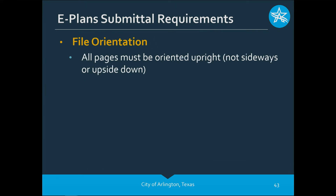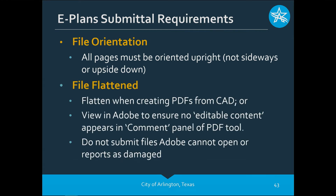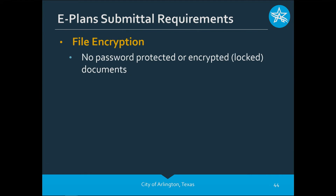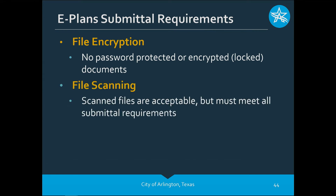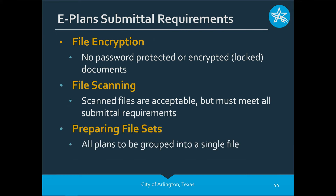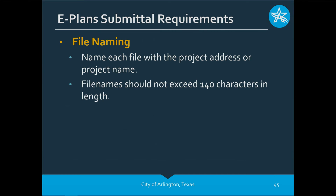All pages need to be oriented upright — not sideways or upside down. Files need to be flat; if converting from CAD there may be multiple layers that need to be flattened before submitting for electronic plan review. No file encryption — no passwords or encrypted documents; we need to be able to open them. Scan files are acceptable as long as they meet all other formatting requirements. All files need to be grouped into a single file. If plans are separated by trade — mechanical, electrical, plumbing — group them into one document unless you exceed 300 megabytes, in which case you can break into two or more files. For file naming, there's no specific system but use something easily identifiable such as the project address or project name, and the file name should not exceed 140 characters.